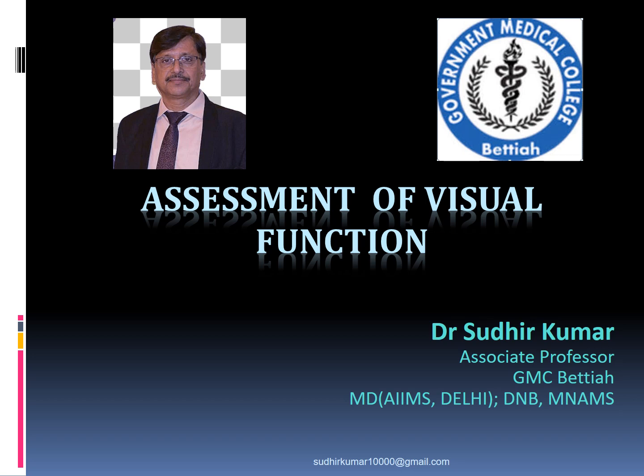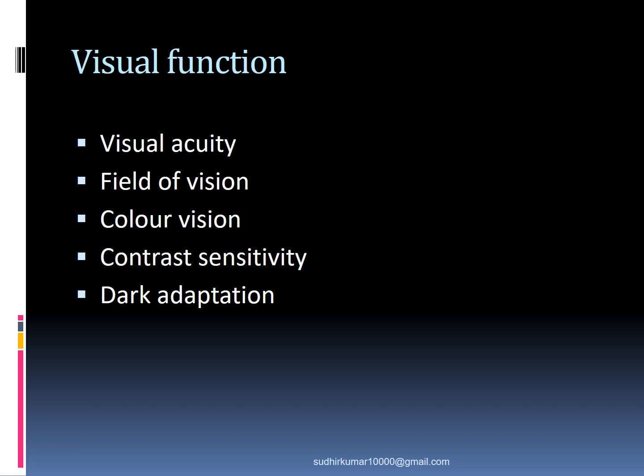Hello students. We shall be discussing various aspects of vision and its assessment in this video. The various attributes of vision are visual acuity, visual field, color vision, contrast sensitivity, and dark adaptation. Visual acuity and field of vision have already been discussed in previous videos. In this video, we shall discuss color vision, contrast sensitivity, dark adaptation, and also the assessment of vision in pre-verbal children.